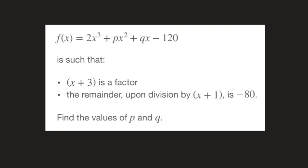We're given a cubic polynomial f of x with two unknown coefficients p and q. We're told that x plus 3 is a factor, and the remainder upon division by x plus 1 is negative 80. We're then asked to find the values of the unknown coefficients p and q.